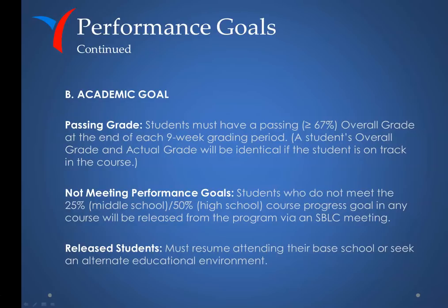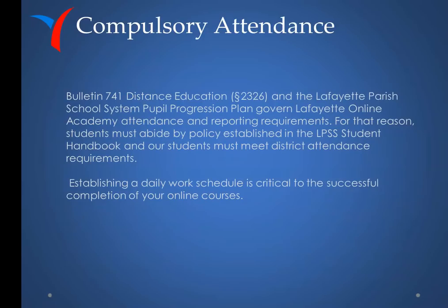A student's overall and actual grades will be identical if the student is on track in the course. Students who do not meet the 25% progress goal for middle school, or 50% for high school, in any course will be released from the program through an SBLC meeting. Released students must resume attending their base school or seek an alternate educational environment. Compulsory Attendance Bulletin 741, Distance Education, and the Lafayette Parish School System Pupil Progression Plan govern LOA attendance and reporting requirements.